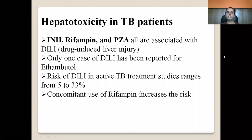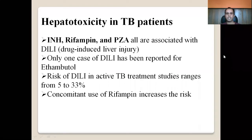In TB patients on active treatment, the risk of DILI ranges from 5 to 33 percent, which is relatively high. Drugs like isoniazid, rifampicin, and pyrazinamide are all implicated in drug-induced hepatotoxicity. Isoniazid alone causes hepatotoxicity, but the addition of rifampicin increases the risk, and addition of pyrazinamide increases it further due to accumulated hepatotoxicity from the drug combination.